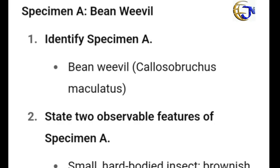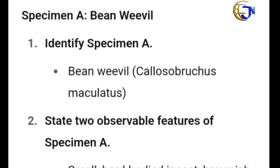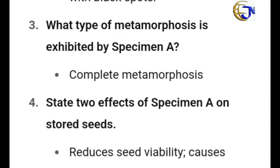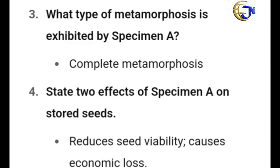The first thing you need to know about Specimen A, being the bean weevil, is to identify the specimen — know the botanical name and the correct spelling. Then state two observable features: it is a small, hard-bodied insect, brownish with black spots. The type of metamorphosis exhibited by the bean weevil is complete metamorphosis.